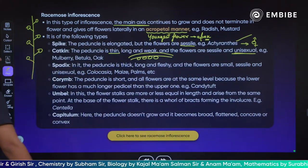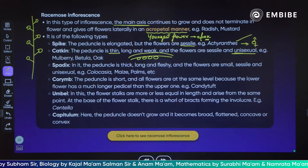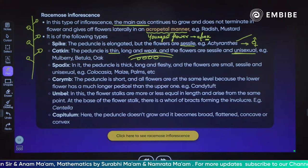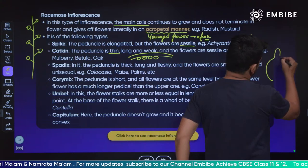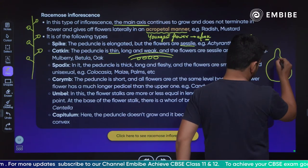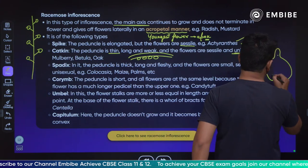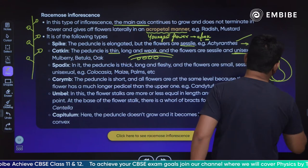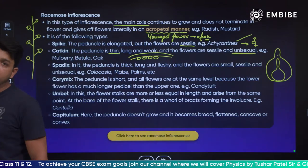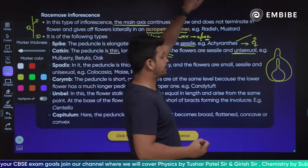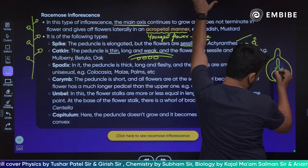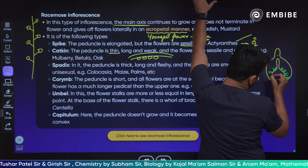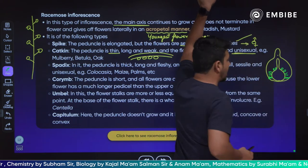Let's talk about spadix. In spadix, the peduncle is thick, long and fleshy. The flowers are small, sessile and unisexual in nature. Examples are colocasia, maize and palm. In spadix, there is a large bract covering it — this is called the spathe. The spadix has male flowers at the top, sterile or neuter flowers in the middle, and female flowers at the base.